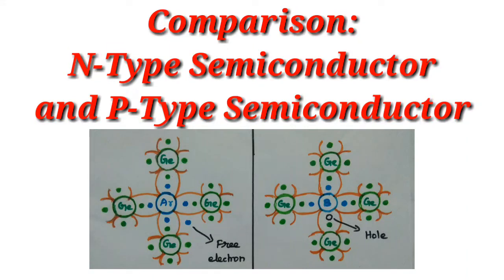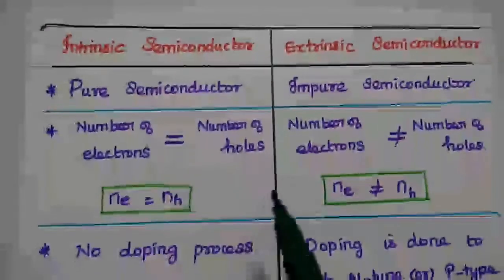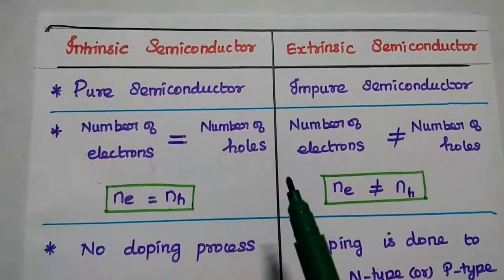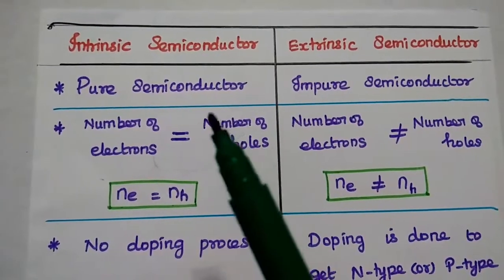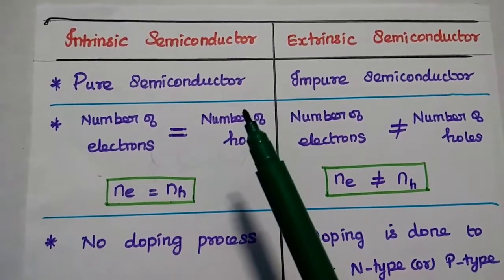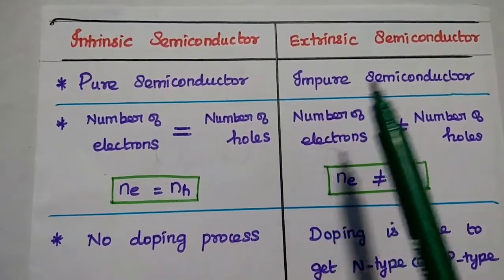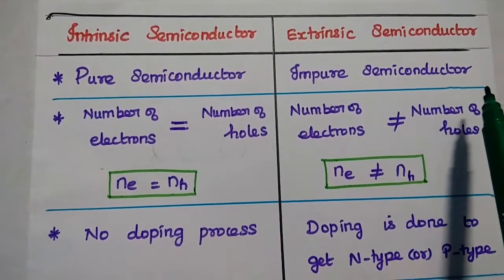Dear students, now we are going to discuss the comparison between N-type semiconductor and P-type semiconductor. Let's start with the comparison of intrinsic semiconductor and extrinsic semiconductor. Intrinsic semiconductor is also called as pure semiconductor. Extrinsic semiconductor is called as impure semiconductor.